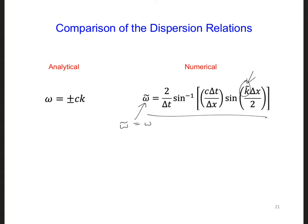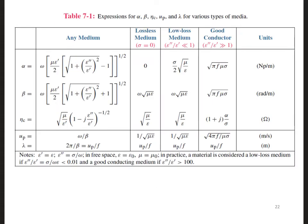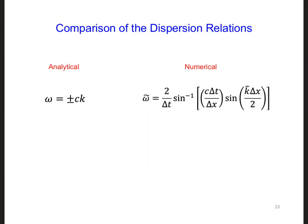We care about this because the physical wave number is always a real number. Here is table 7-1 again. k is equal to beta. We often use k for lossless materials, and beta is more commonly used for lossy materials. You can see in the third column of the second row that for a lossless medium, k, or beta, is a real number. So then, to figure out if the numerical wave number is ever complex, let's rearrange the numerical dispersion relation to solve for k̃.